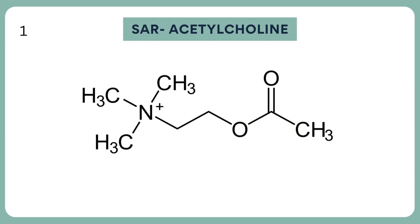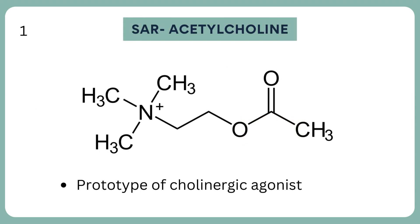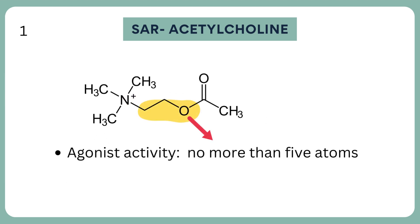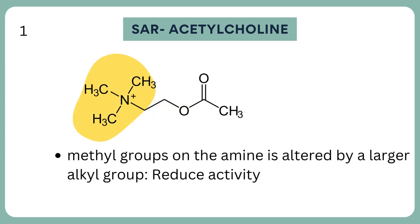Now let's discuss some important structural activity relationships. Acetylcholine is considered the prototype of cholinergic agonists, having actions at all muscarinic and nicotinic receptors. Agonist activity requires that there be no more than 5 atoms between the nitrogen and the terminal hydrogen on the acyloxy group. Larger substitution on the quaternary nitrogen reduces activity.